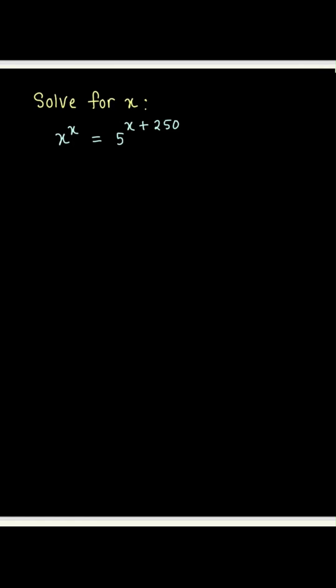In this problem, x is sitting at three places in the equation, and we are supposed to somehow find it. Now, this is not your average problem — this is actually quite a tricky problem. It may seem like we are doing random things here, but they won't be random. Everything that we will do will be to bring the left-hand side and the right-hand side in the same structural form. So let's see how it is done.